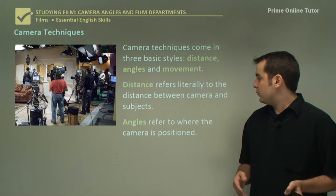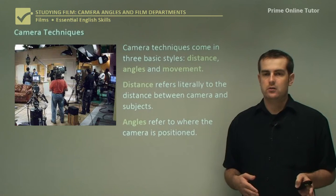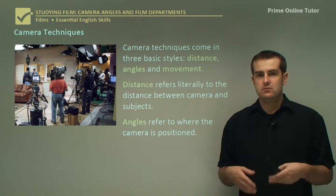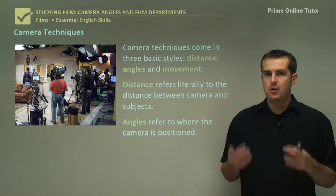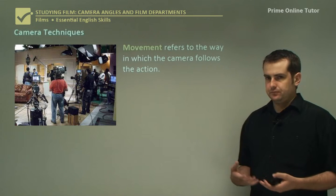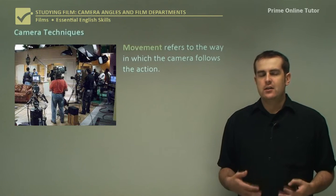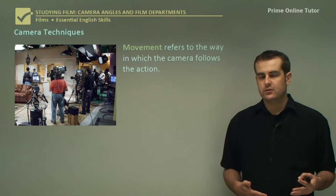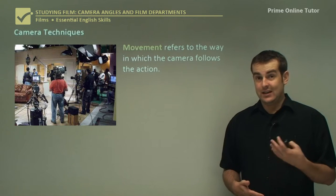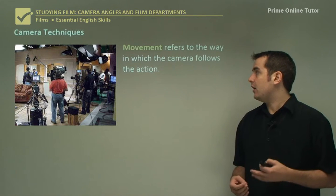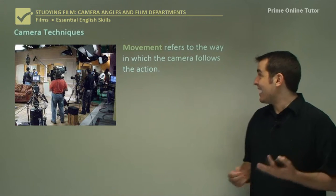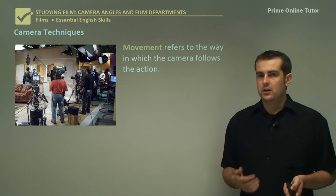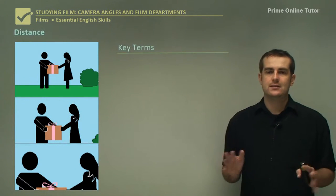Angles refer to where the camera is positioned in terms of its angle to the subject — whether it's down low, up high and so on. Movement refers to how the camera moves: if it's attached to something, what it's attached to, how it moves. All those things are tied into the idea of movement and how they capture action during shooting. So let's have a look at some key terms, starting with distance.